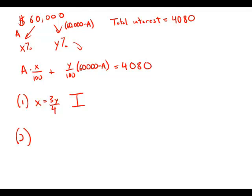Statement number two tells us that the ratio of the amount of interest earned at X percent to the amount of interest earned at Y percent is 3 over 2. That's another equation, but combined with the original we still have only two equations for three unknowns, so statement two is also insufficient.